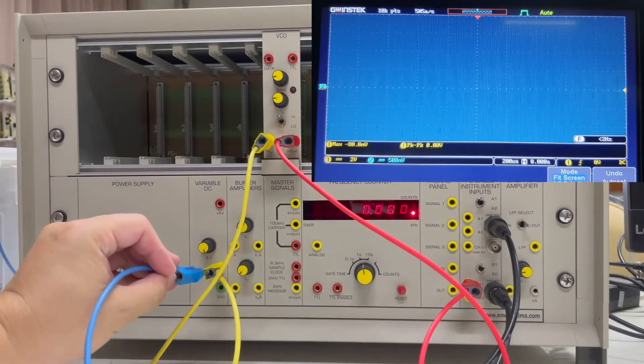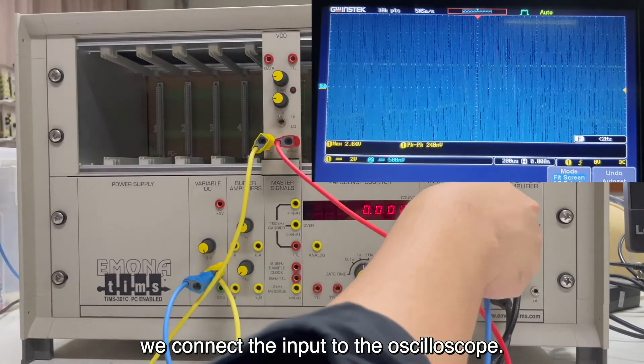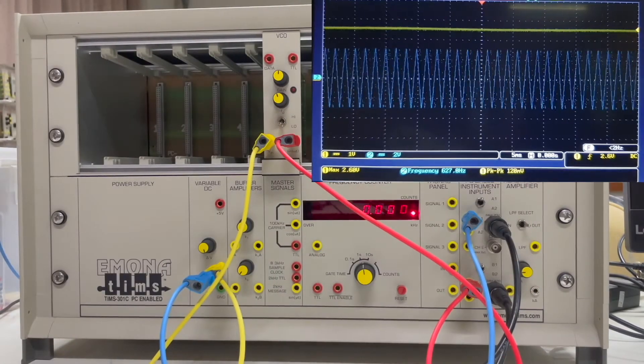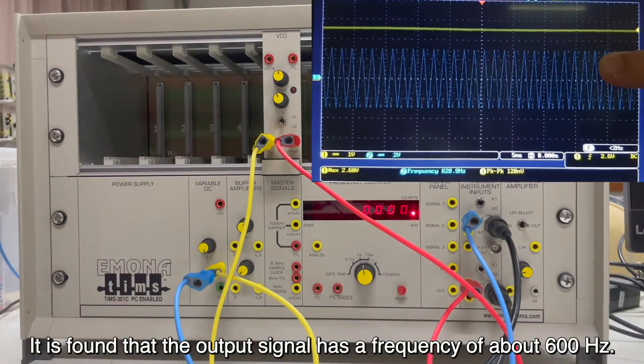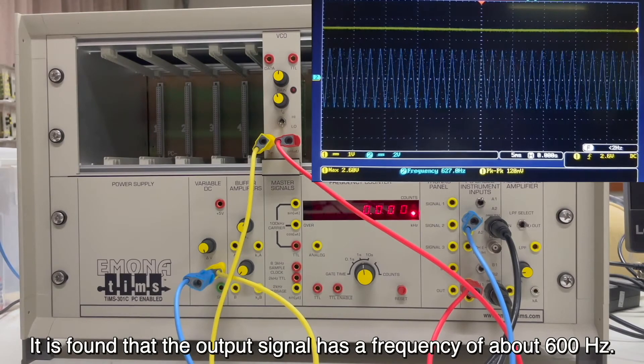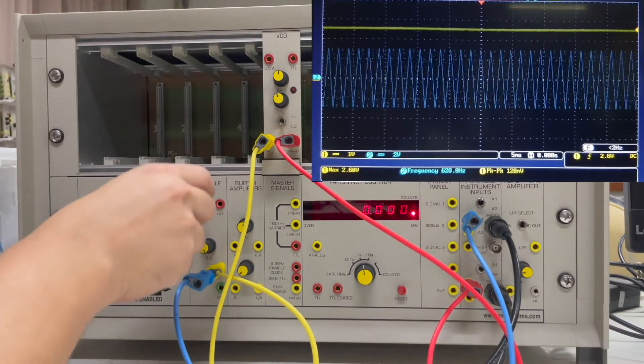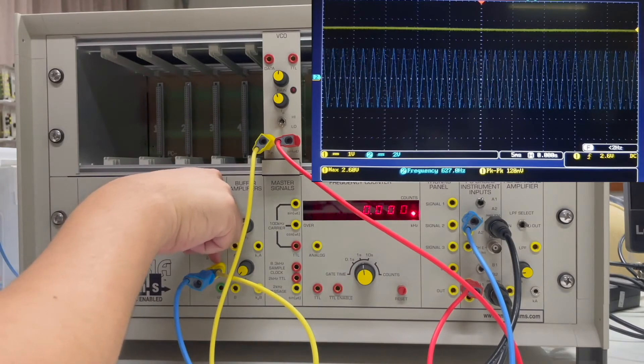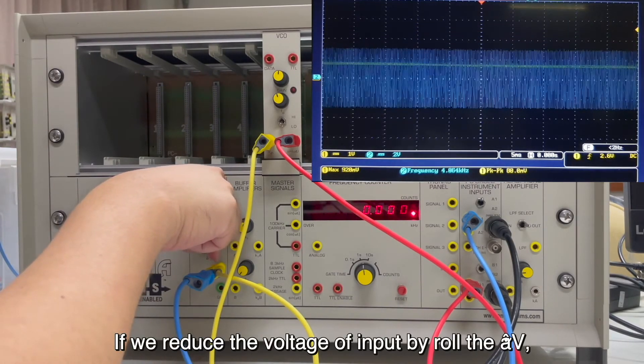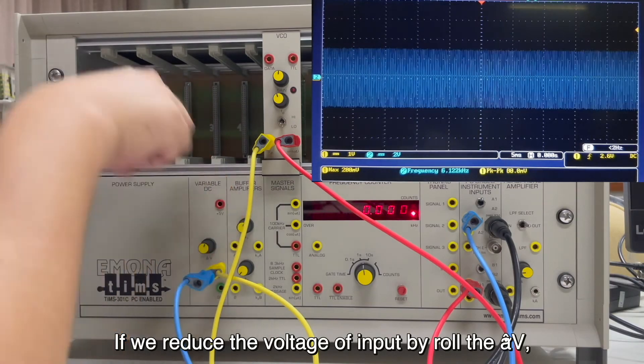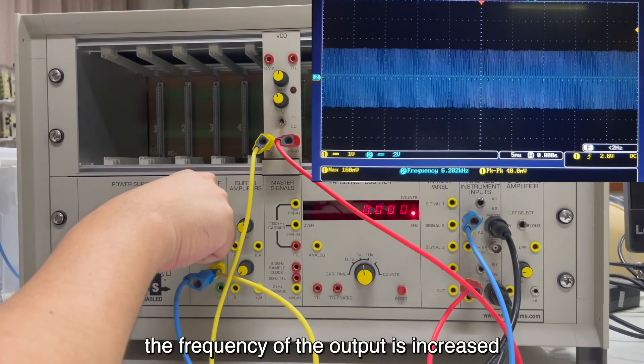After that, we connect the input into the oscilloscope. It is found that the input signal have a frequency of about 600 hertz. If we reduce the voltage of input by lowering the AV, the frequency of the output is increased.